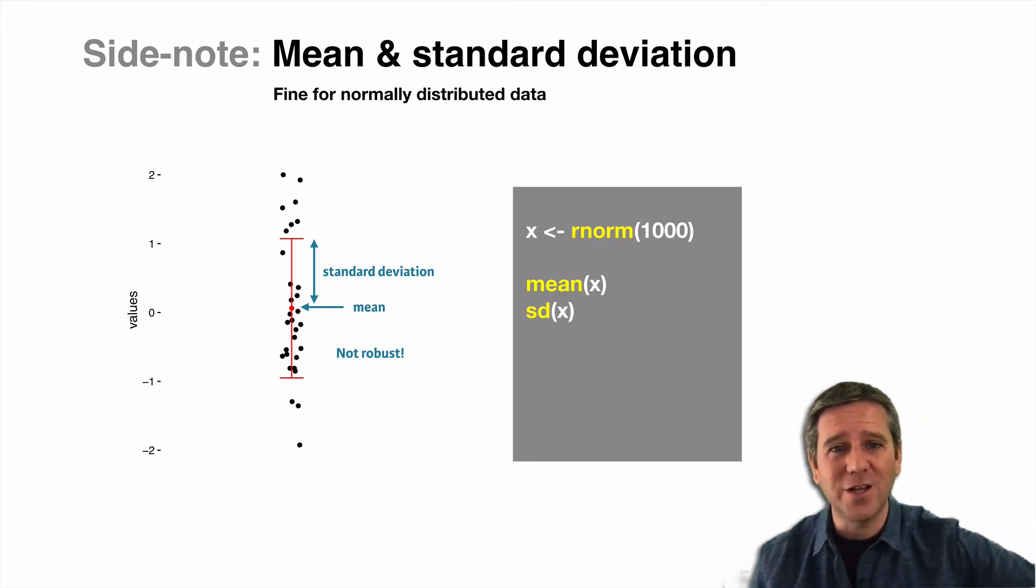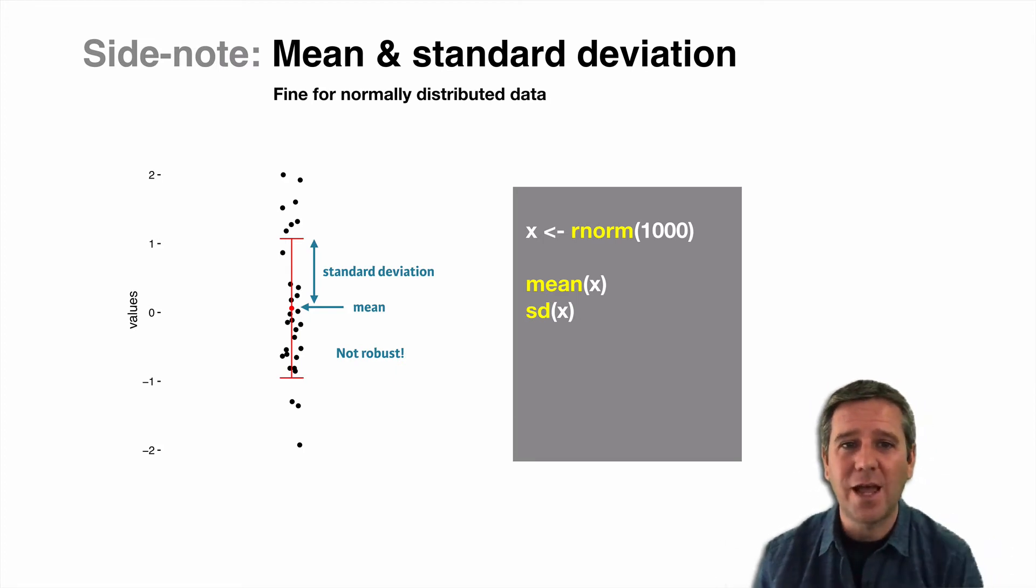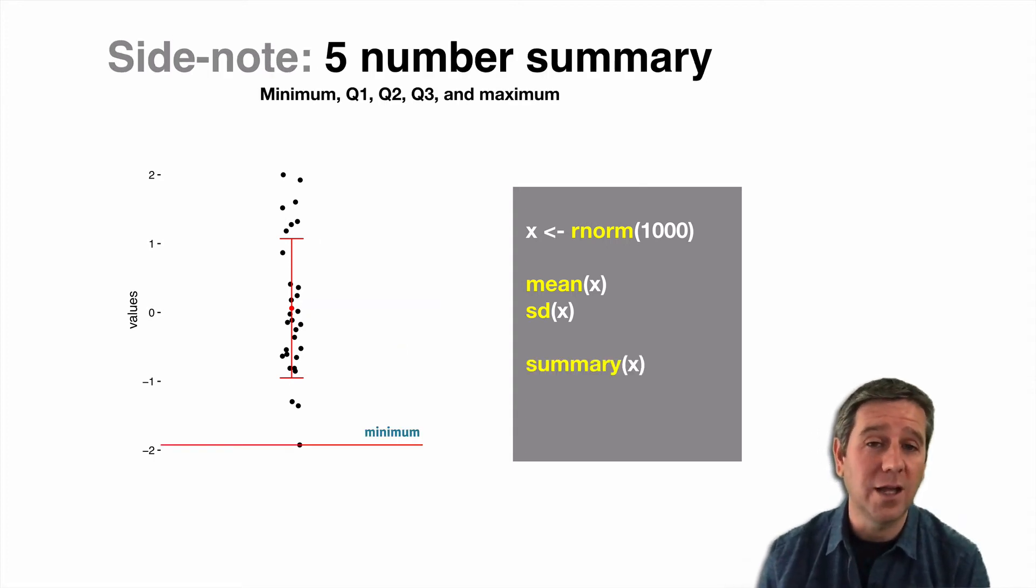Once you've done that, you can calculate some standard summary statistics that are fine for normally distributed data, such as the mean and the standard deviation as shown here.